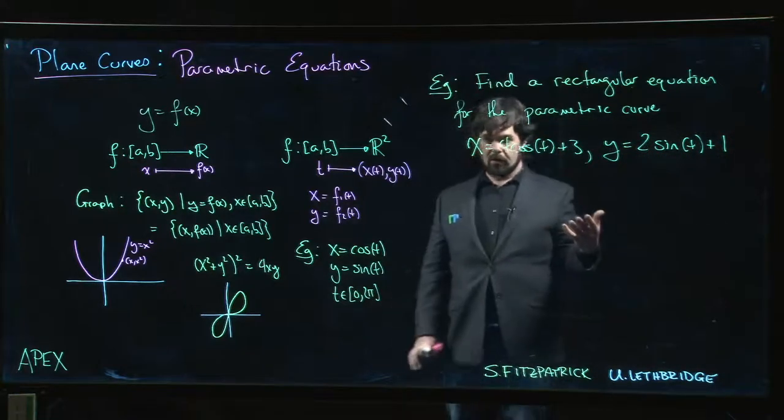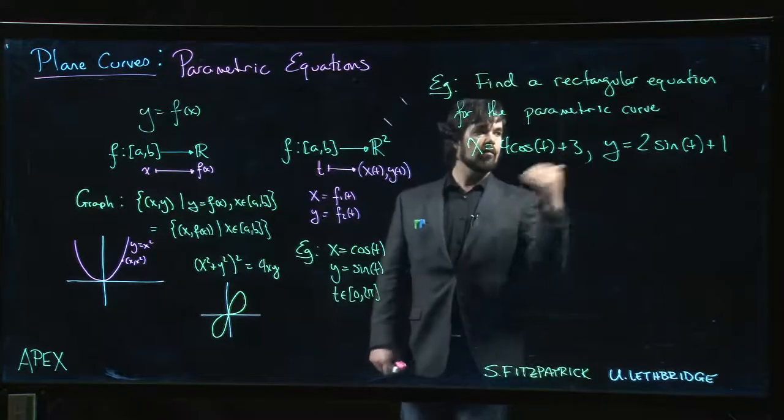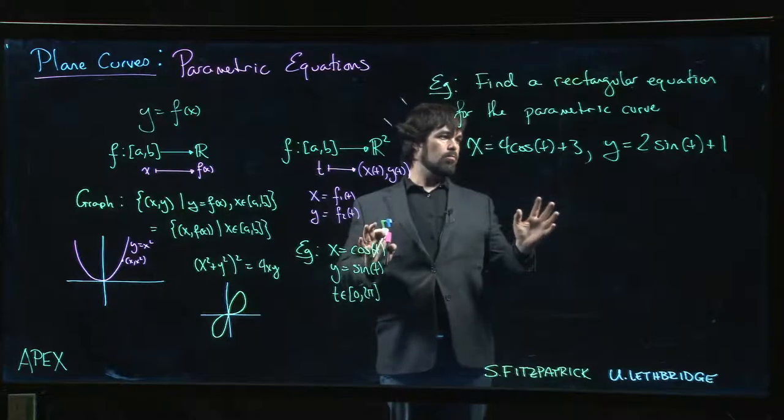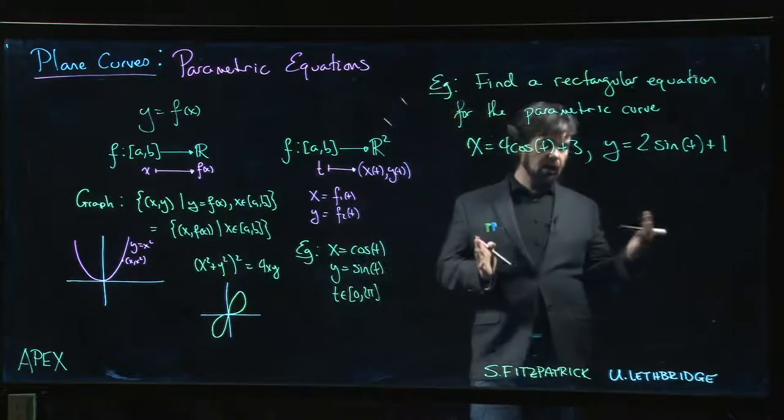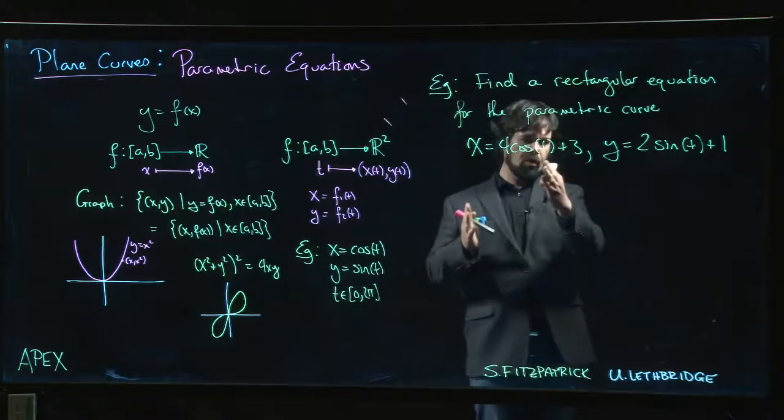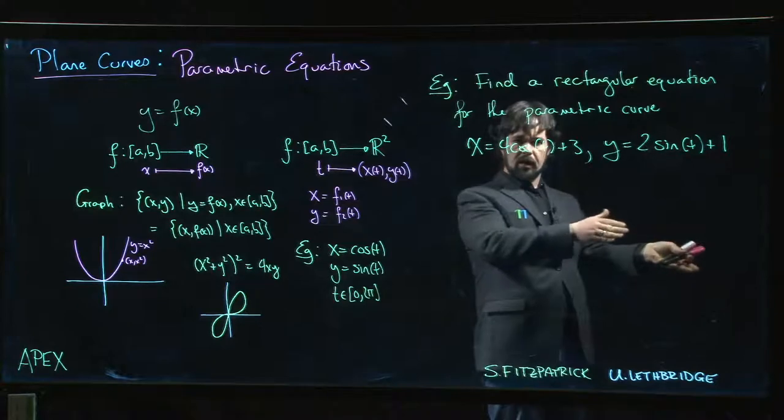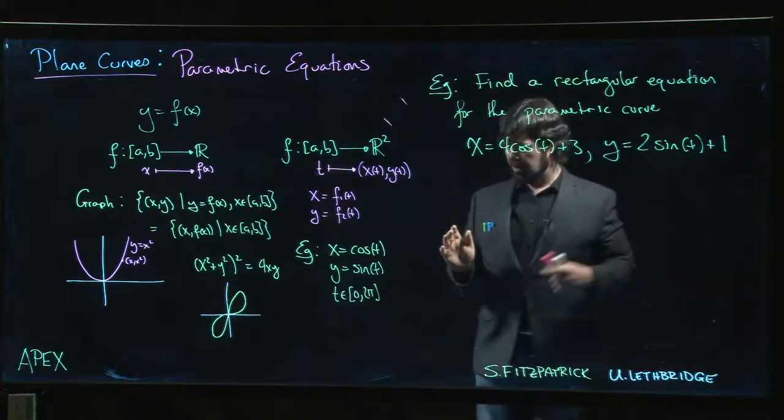Here's another example where we're going to eliminate the parameter t and recover a rectangular equation from parametric equations for some curve. Now, what we're going to do here - maybe it's not clear how to proceed. Should you solve for t like in the last one, where we tried to solve for t in one equation and plug it into the other? But we have sines and cosines; we really don't want to get inverse trig functions into the picture.